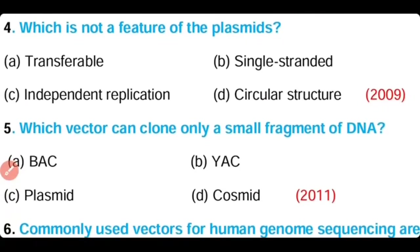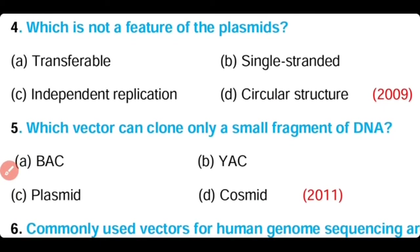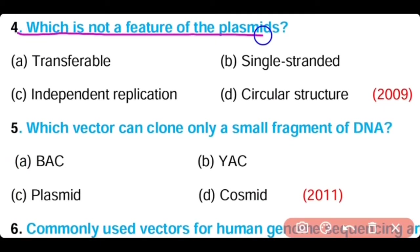Question 4: Which is not a feature of plasmid? Options: It is transferable, it is single-stranded, it has independent replication, or it has circular structure. The correct answer is option B. Plasmid is not single-stranded; rather, it is a double-stranded DNA molecule.